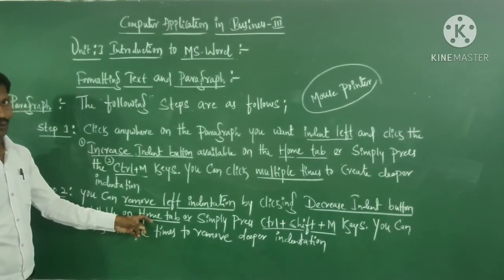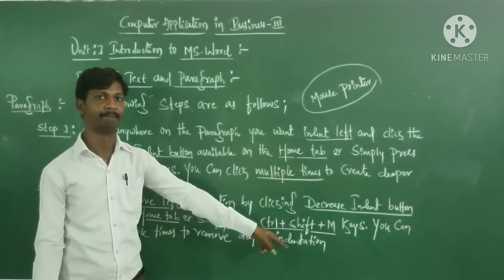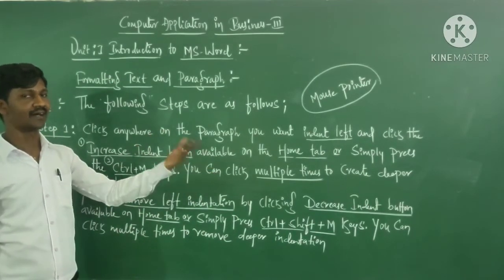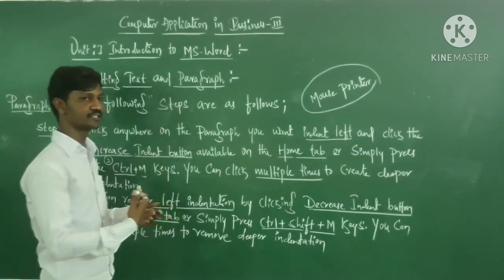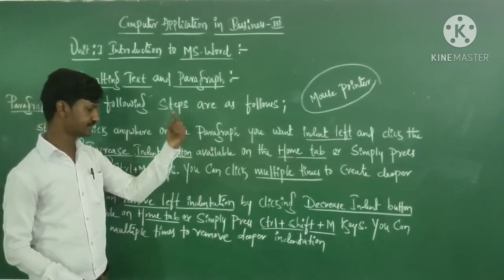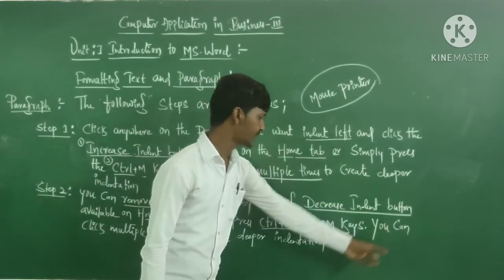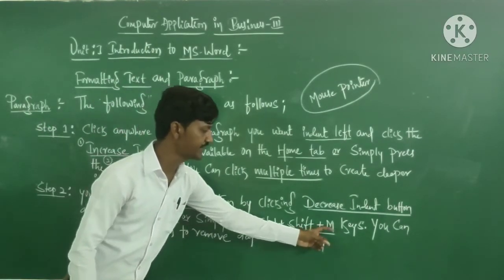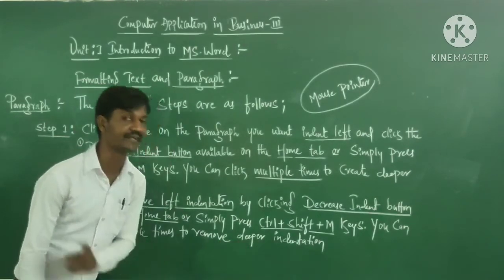To decrease the indent, available on the Home tab, simply press Control plus Shift plus M. That is used to decrease the indent button or remove left indentation. Control plus Shift plus M. You can click multiple times to remove deeper indentation.